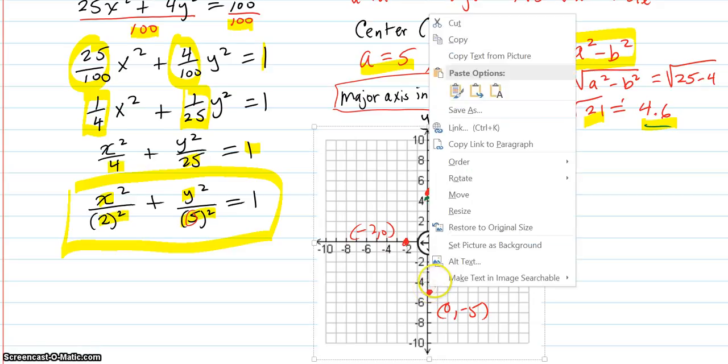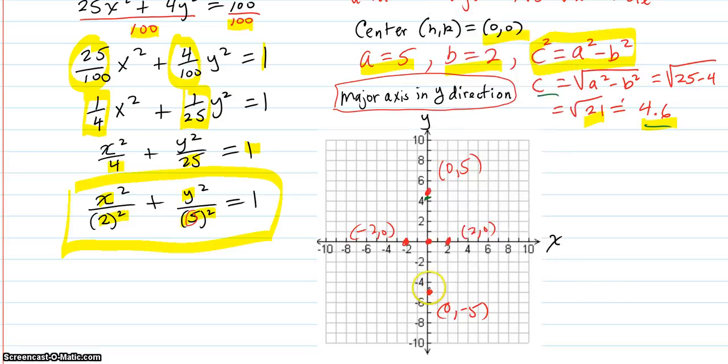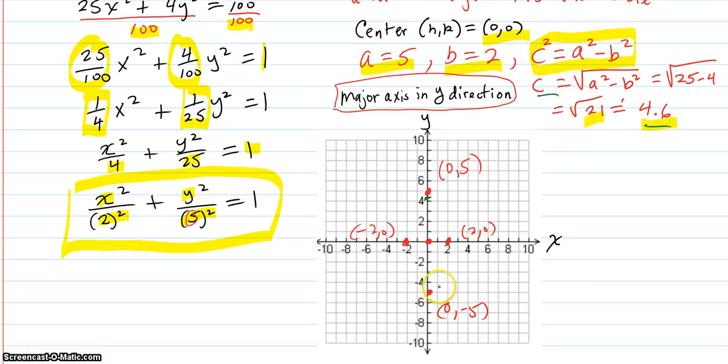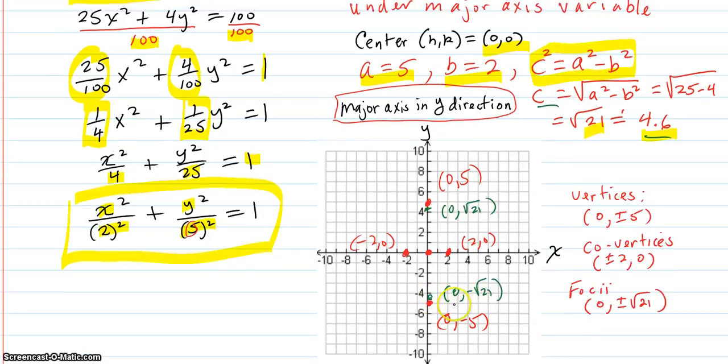Somewhere in there. Really close. That's what's making it be so narrow. So we label these foci here. 0, square root of 21. 0, negative square root of 21.